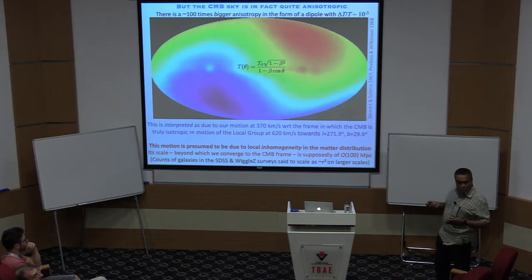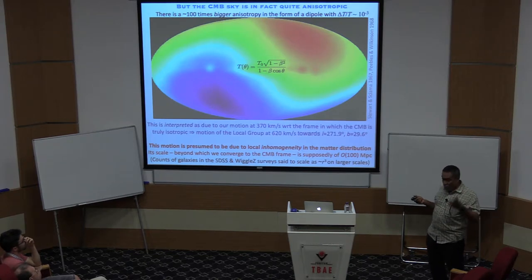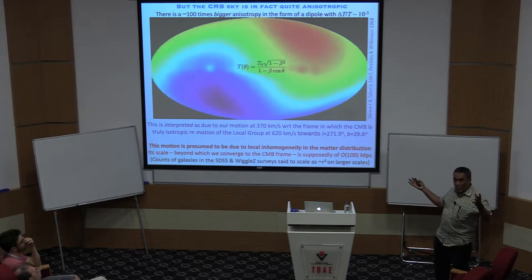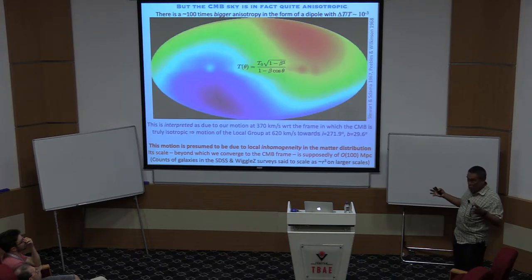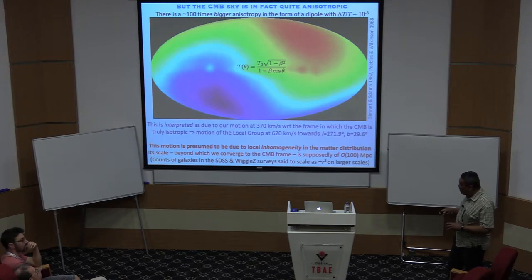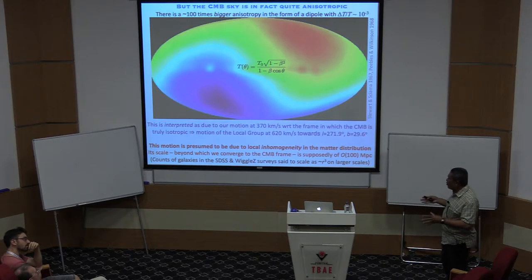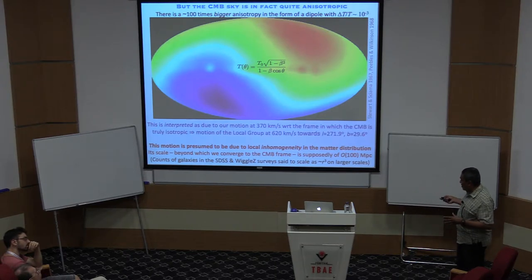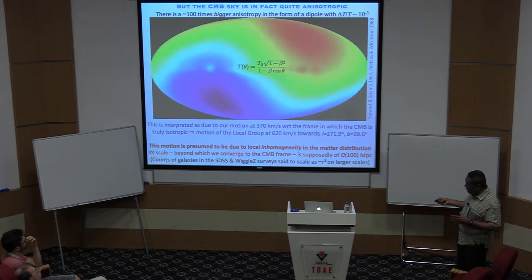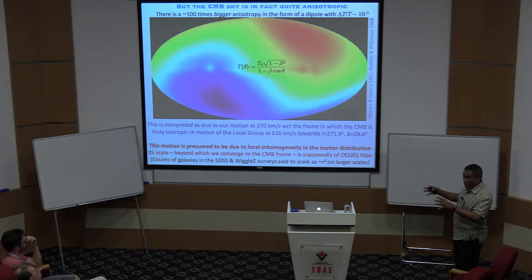The motion of the local group — our galaxy, Andromeda, the Magellanic Clouds — is actually faster because the Sun is moving in the opposite direction around the galaxy, so the two velocities add up. Our local group is moving at this velocity towards this direction. We believe this motion is due to some local inhomogeneity that is pulling us. Andromeda is not going away from us in the Hubble flow — it is close enough to be under our gravitational attraction. You expect local departures from the Hubble flow causing streaming motions, but they should die out at around 100 megaparsecs. Counts of galaxies in the Sloan Digital Sky Survey are supposed to scale as R³ — homogeneity — on scales larger than 100 megaparsecs.